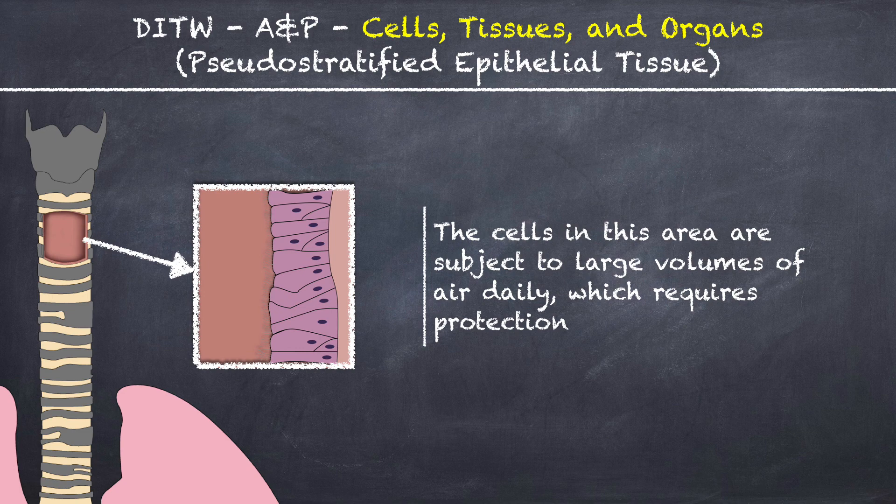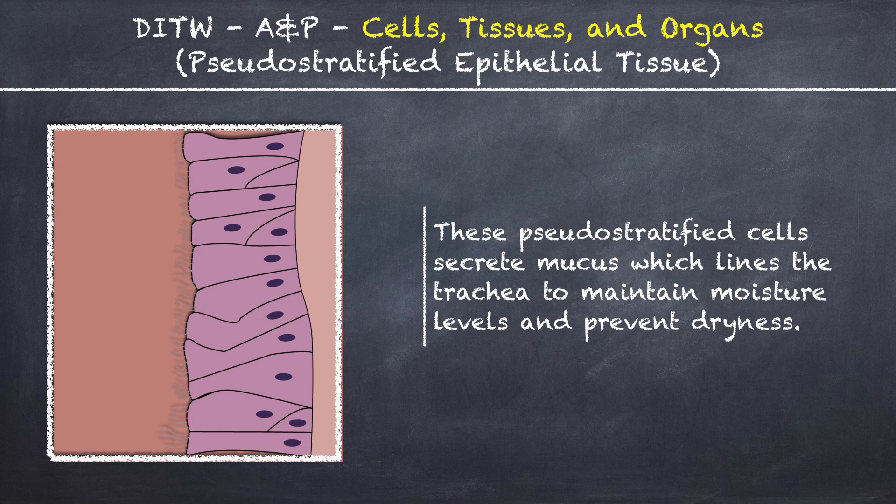The cells in this area are subject to large volumes of air daily, which requires protection. These pseudostratified cells secrete mucus which lines the trachea to maintain moisture levels and prevent dryness.